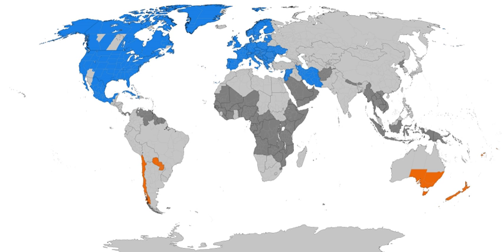DST inherits and can magnify the disadvantages of standard time. For example, when reading a sundial, one must compensate for DST along with time zone and natural discrepancies. Also, sun exposure guidelines such as avoiding the sun within two hours of noon become less accurate when DST is in effect.